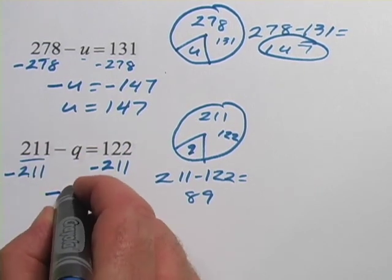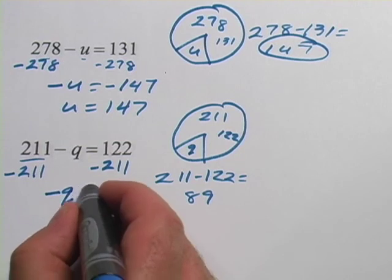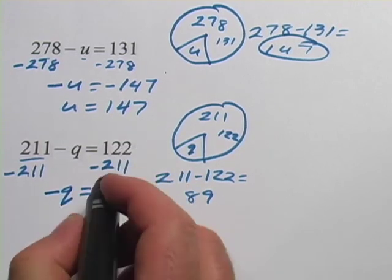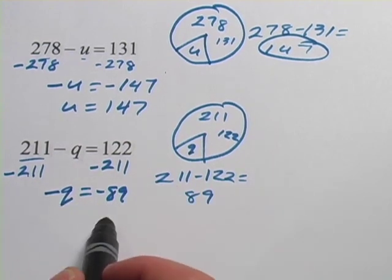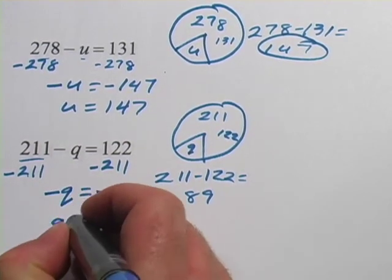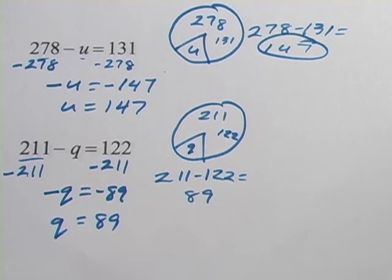Then we have to leave that minus sign there. So we have a negative q equals, and 122 minus 211 is going to be a negative 89. And if a negative q equals negative 89, then a positive q equals a positive 89.